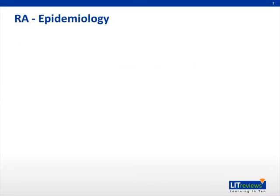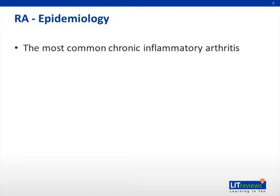So what is rheumatoid arthritis? It is the most common chronic inflammatory arthritis. We will go over the clinical features in a few slides. In terms of epidemiology, the prevalence is about 1% in the US and Europe, although this can vary based on ethnic background.